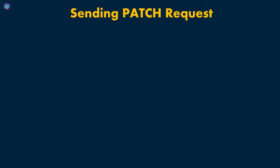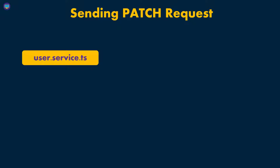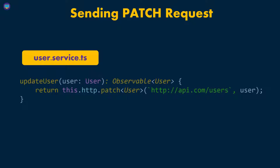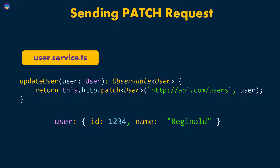As mentioned before, PUT and PATCH are both used to update, and there's just one difference between them. In our user service, we'll create another function — we can call it updateUser — and then call patch on the HTTP client, passing in the payload to that URL. It's exactly the same way as you would do a PUT, but the only difference is we don't have to send the entire data.